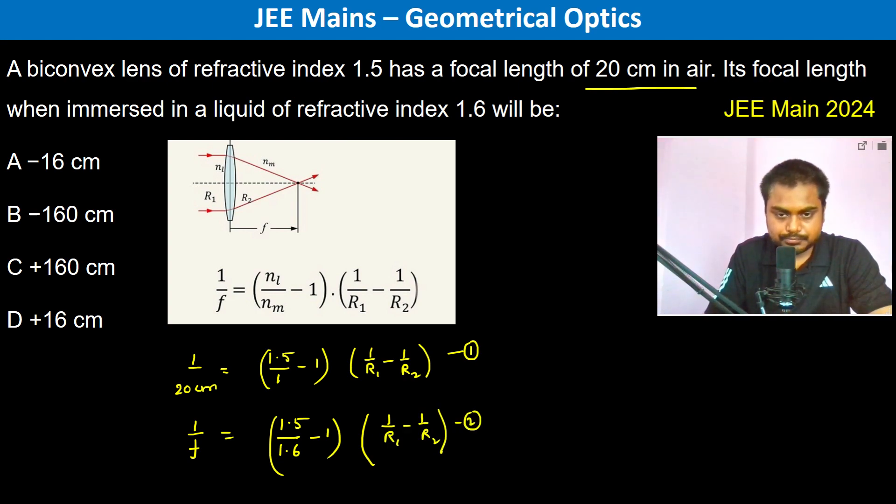This is going to be f divided by 20 centimeter is equal to 0.5 divided by minus 0.1 into 1.6. So therefore f is going to be minus of 5 into 1.6 into 20 centimeter, so minus 8 into 20 centimeter which is going to be minus 160 centimeter.